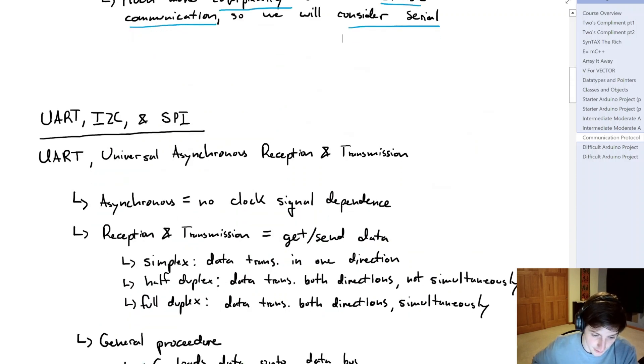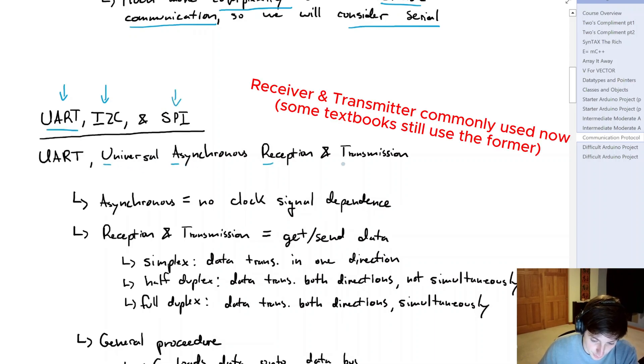So if we start to look at our serial communication protocols, there's three that we want to focus on. We have UART, we have I2C, and then you have SPI. So if we start with UART, it's going to stand for universal, asynchronous, reception, and transmission. So we can break down what this means.